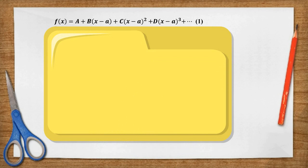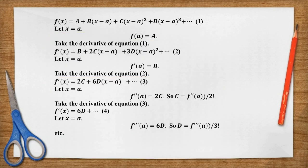To do this, we repeatedly let x equal a, and then take the derivative of both sides. You can see here that this gives you the values of a, b, c, etc. Which you can then substitute into the original formula. And this will give you the Taylor series formula.